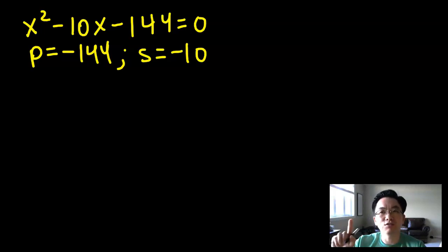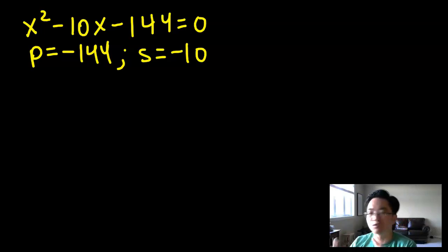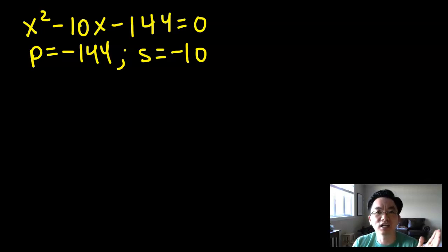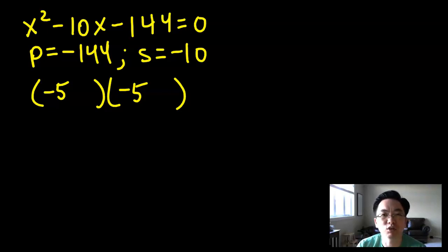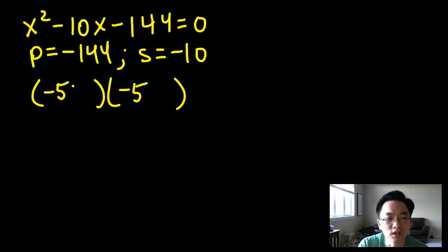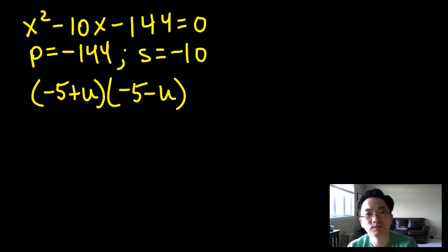Instead of looking for two numbers that first have a product of negative 144 and then figuring out if they add up to negative 10, we're actually going to reverse that — think of two numbers that add up to negative 10. And it's really easy, because you can just take negative 10 and divide it into two equal parts: negative 5 and negative 5. Then we're going to add some number u to the first negative 5, and subtract that same number u from the second negative 5.